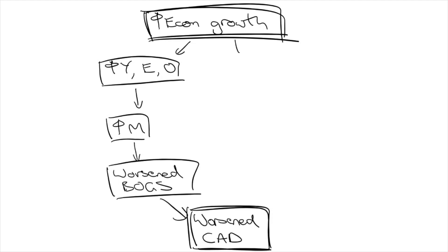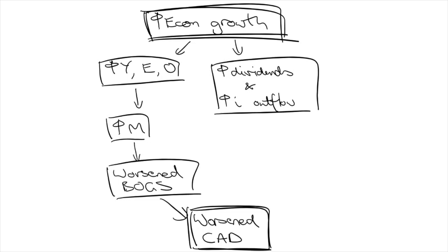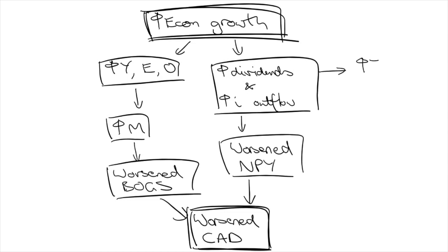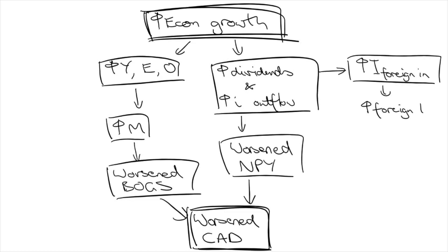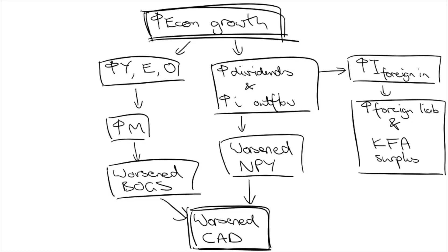Furthermore, greater company profits mean more dividends issued and sent overseas. Interest rates often increase too, leading to greater interest outflows. Both of these lead to a worsened net primary income account in the CAD. Furthermore, high interest rates and dividends will attract more foreign investments into Australia, increasing our foreign liabilities and further worsening our net primary income accounts.